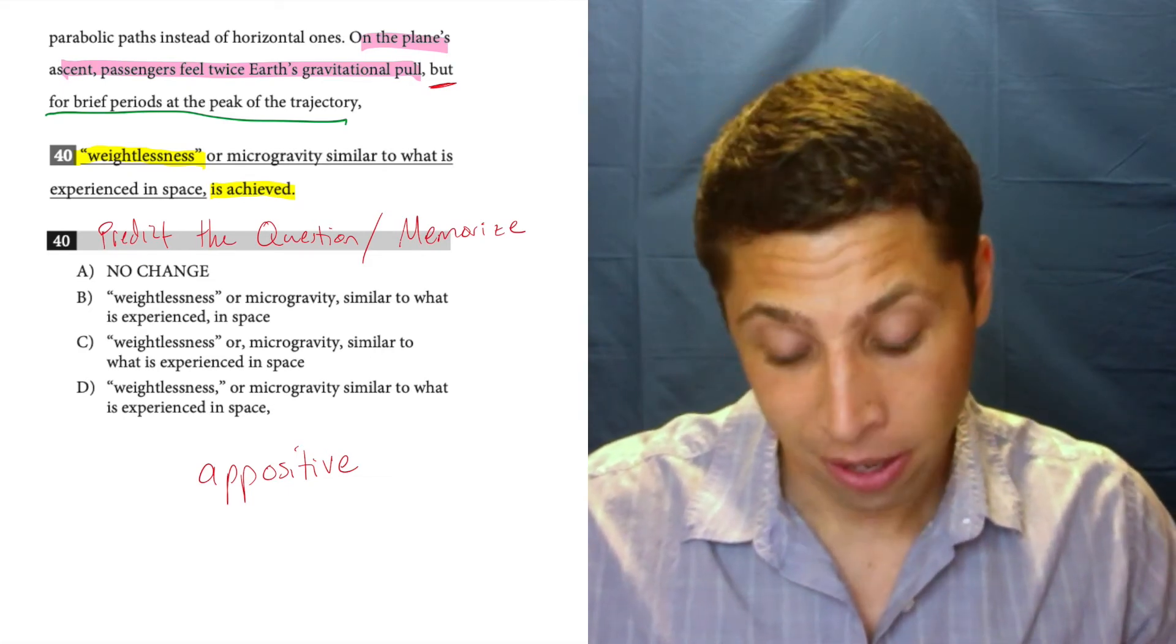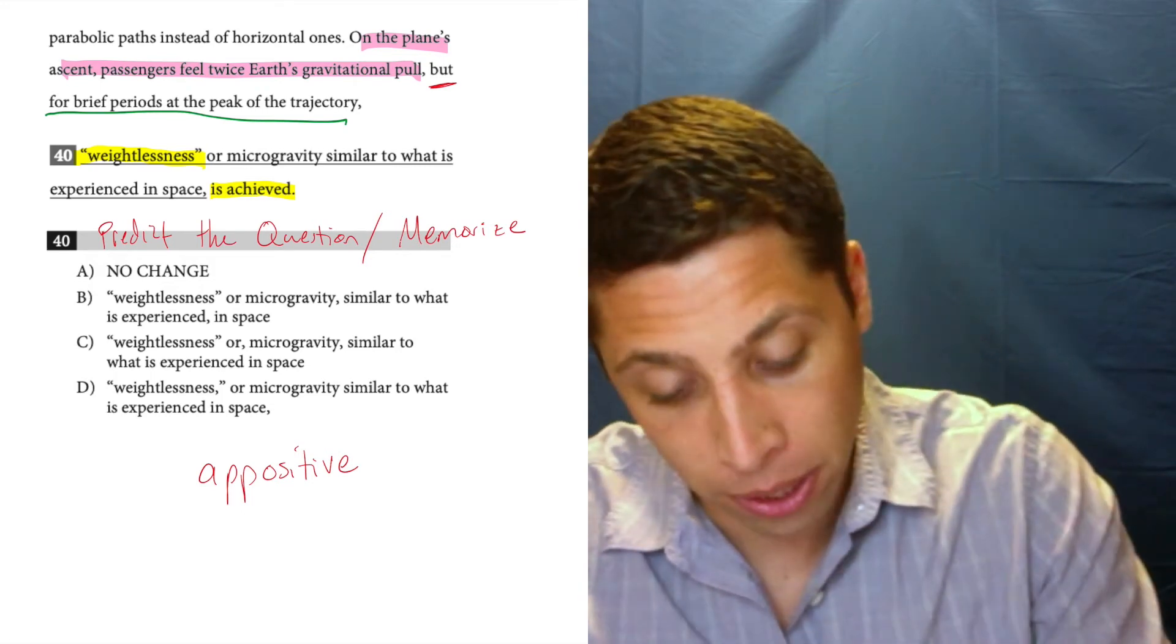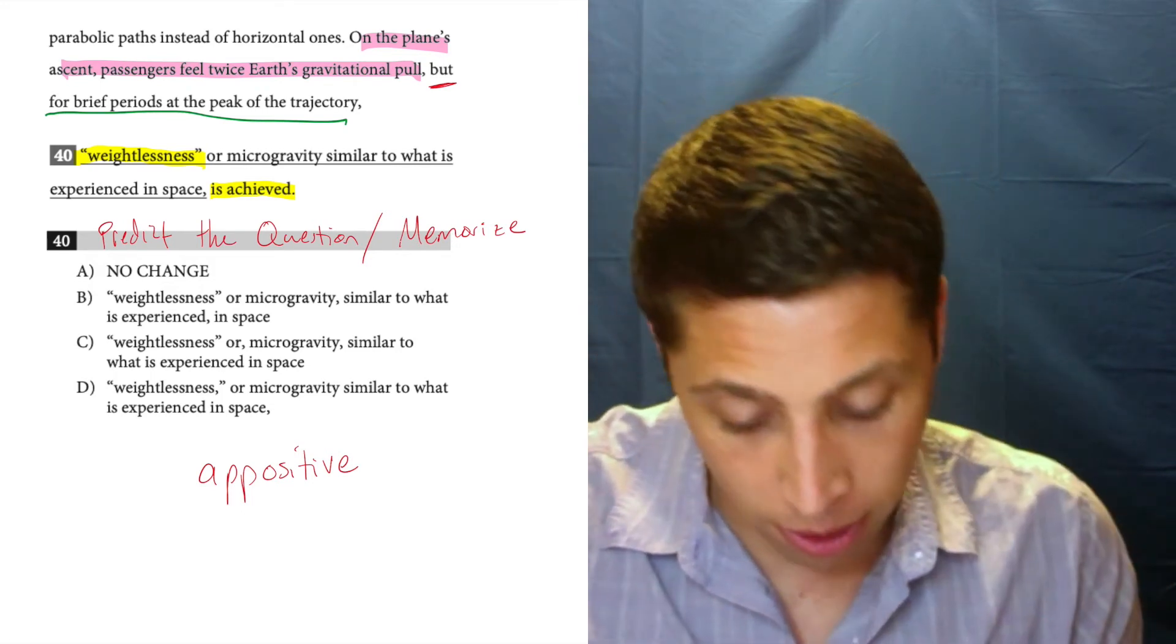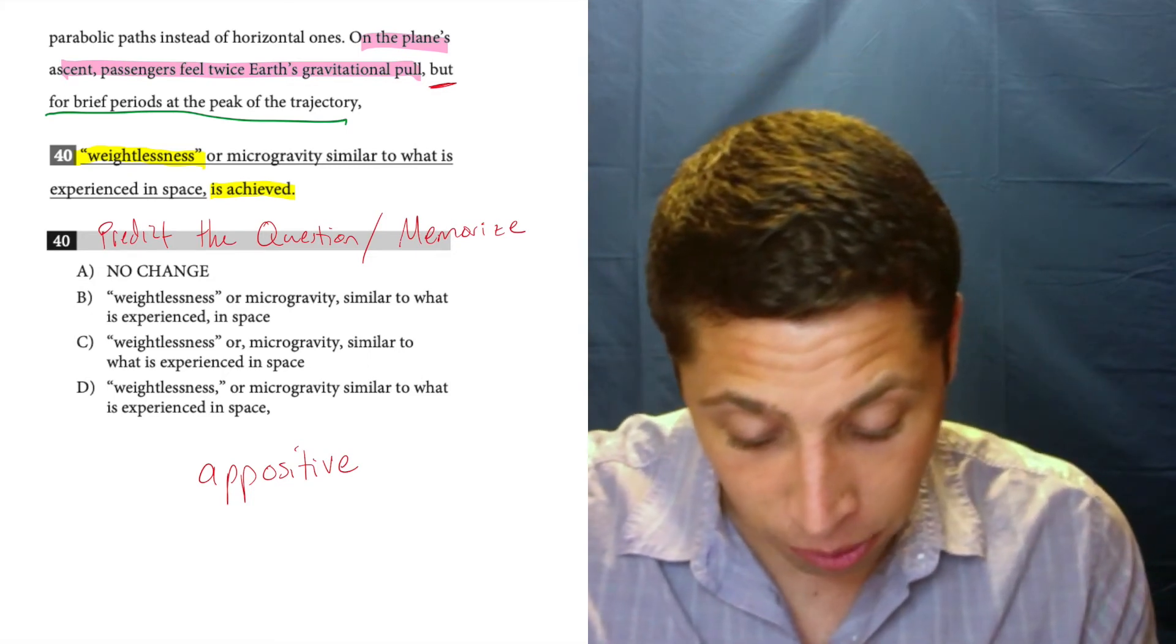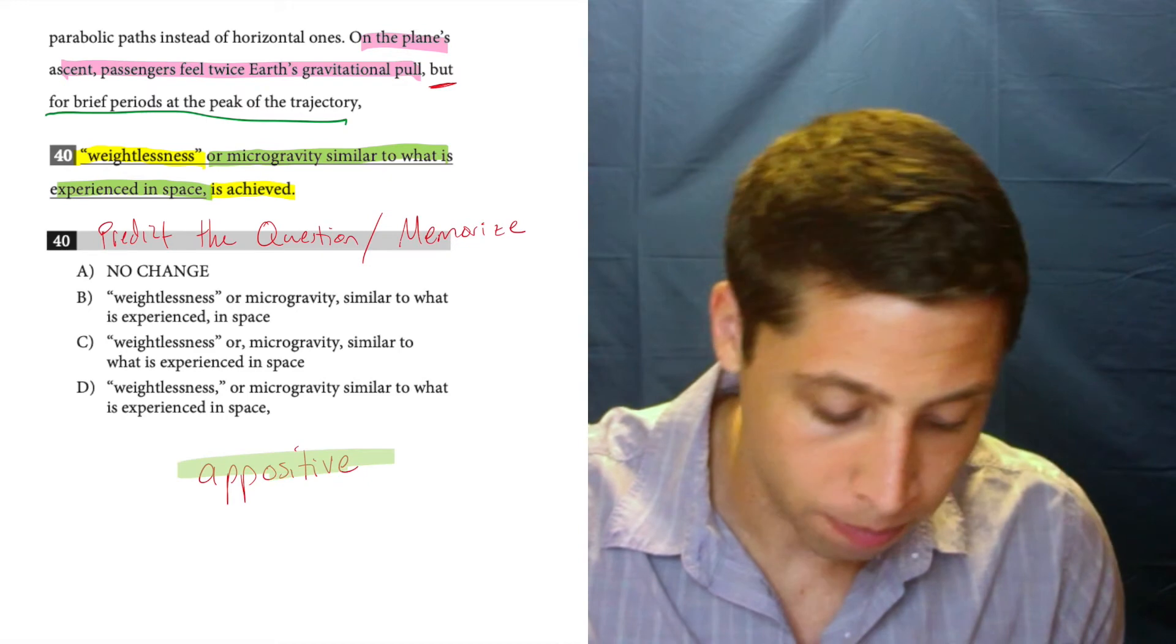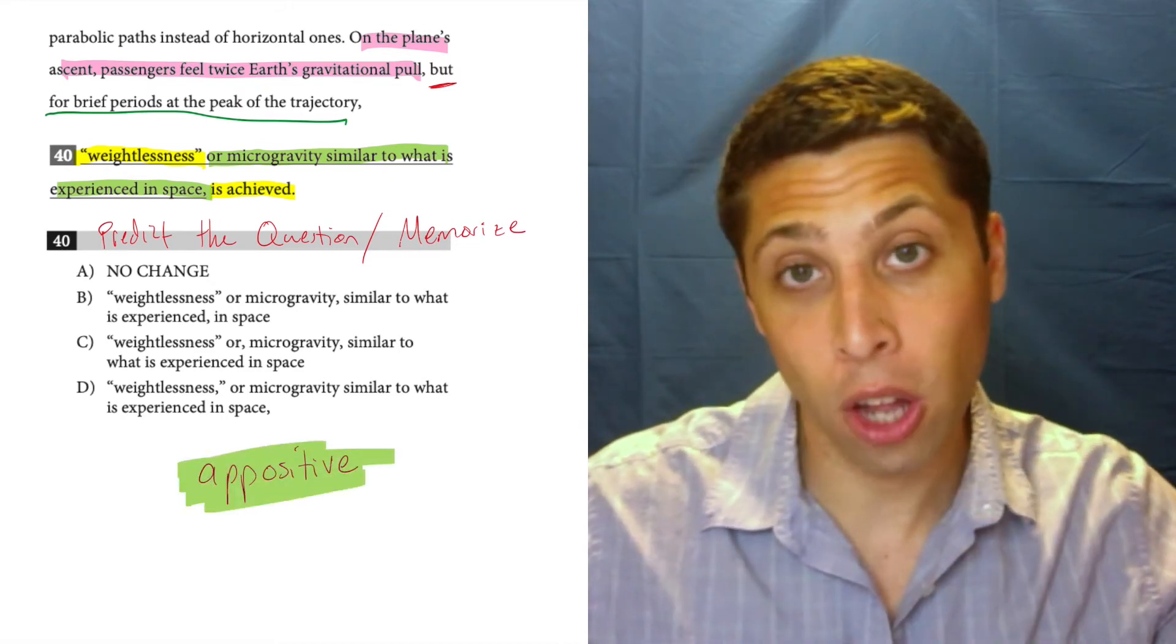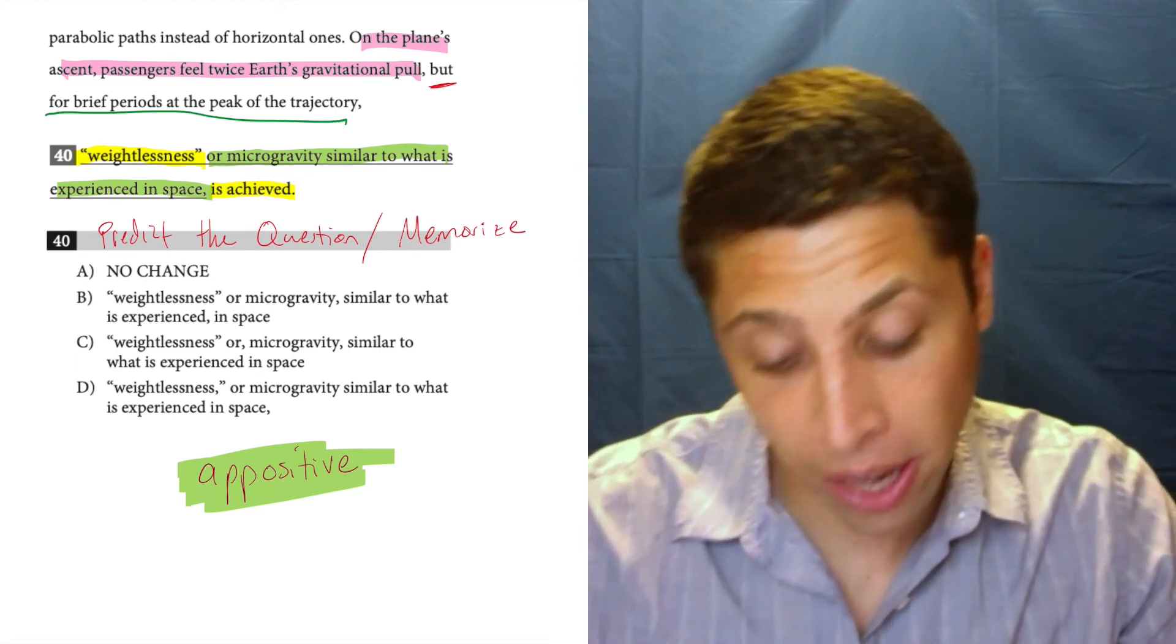And we do that with, in this case, two commas. So where do we put those commas? We put it where the main sentence begins and ends. So I'll just use a green here to highlight what the appositive is. That part in green is one long description. So we're going to use commas on both sides of that. So we need a comma after the word weightlessness.